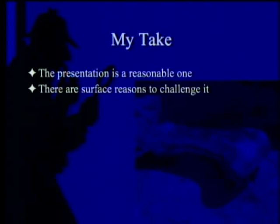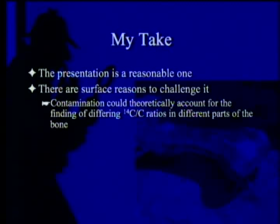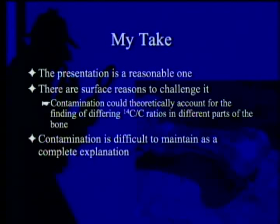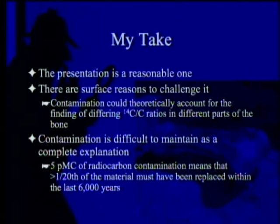My own personal view: I think the presentation is a reasonable one — it's not perfect, most presentations aren't — and there are surface reasons to challenge it. Contamination could theoretically account for differing carbon-14 ratios in different parts of the bone. But it's difficult to maintain as a complete explanation because you have to explain how you can take 5% of the bone — one twentieth of the material — and have it exchanged in the last 6,000 years. If you replace it 12,000 years ago you need double, 18,000 years you need four times that. If you do it 25,000–30,000 years ago, you have to replace the entire bone. So it has to have been done in the last 6,000 years to be reasonable — but if that's been going on for 65 million years, why isn't the entire bone replaced?